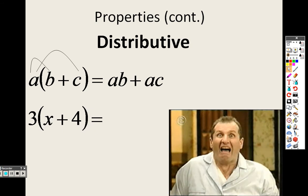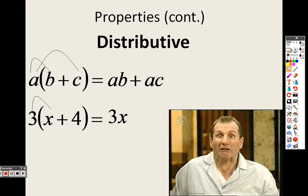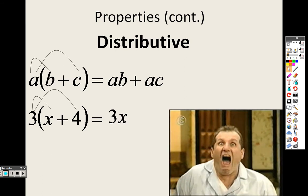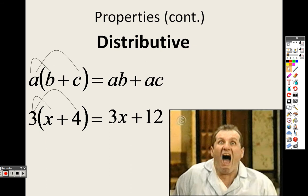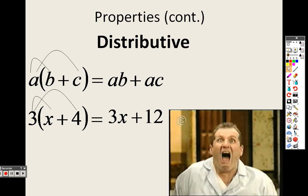To see this as an example, the distributive property states you do 3 times the first term. So 3 times x is 3x, and then 3 times 4 which is a positive 12, which is why I put a plus sign there.